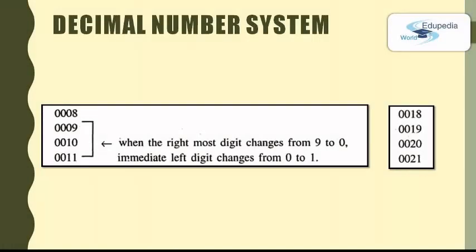And at that moment, the immediate left digit changes from 0 to 1 as shown here. And then again, the reading will be changing from 11 to 12, 12 to 13, 13 to 14, continuing through 15, 16 and so on until 19. And then the next reading will be 20. The rightmost digit has again turned to 0 from 9 and sequentially, the immediate left digit has been turned to 2 from 1 as shown in this image.